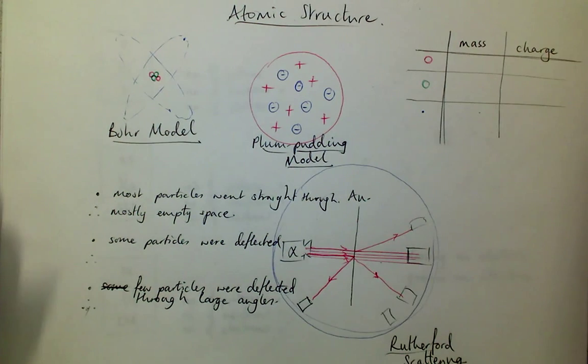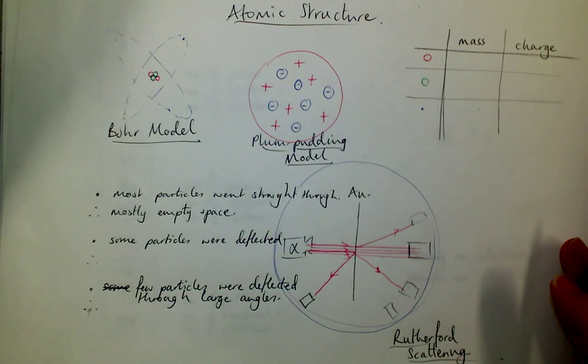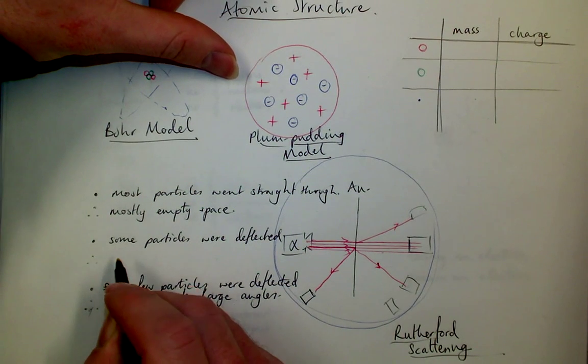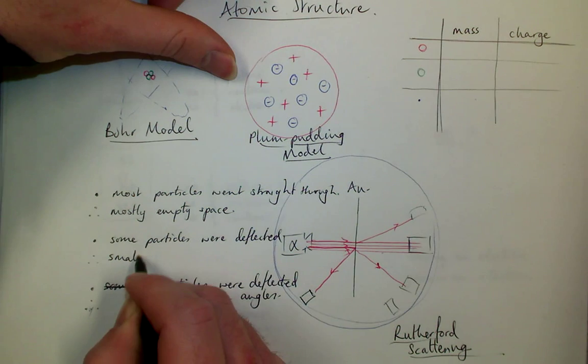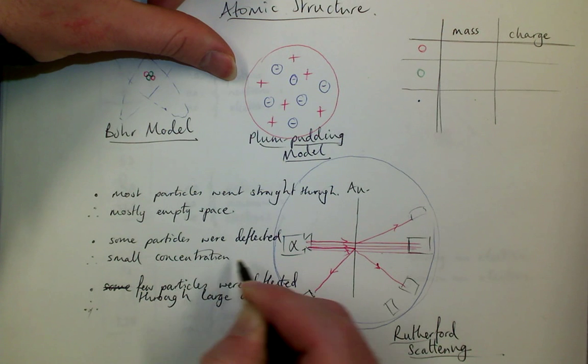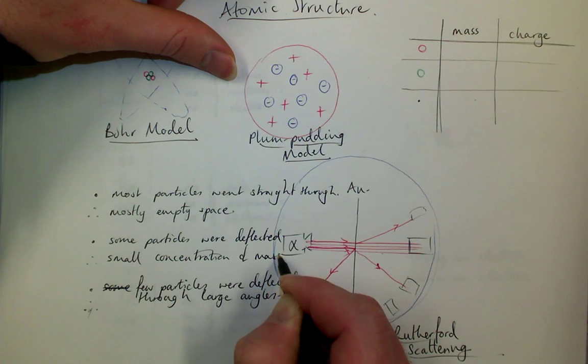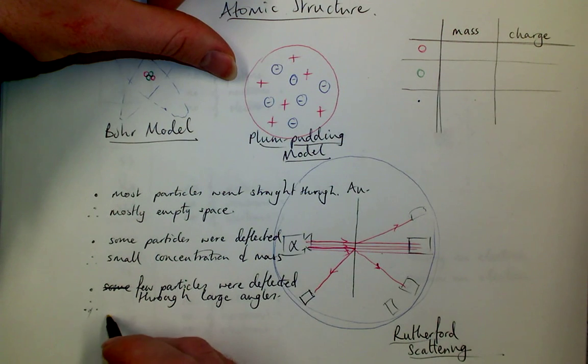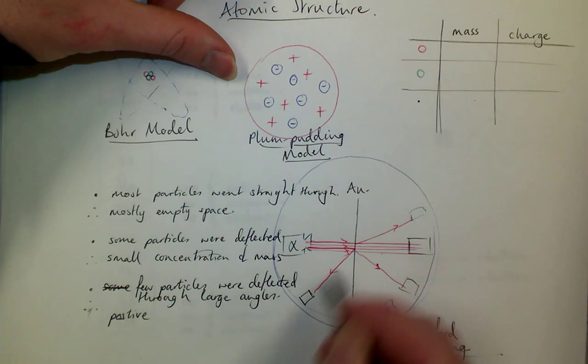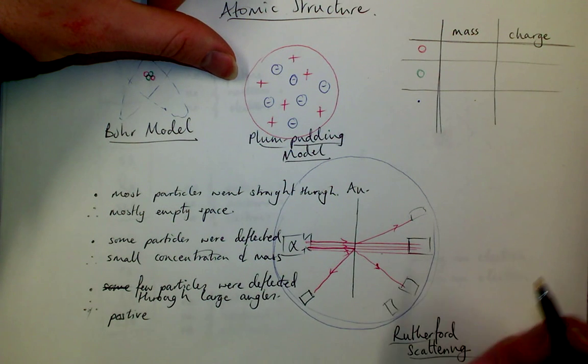And his two conclusions for this was that, firstly, there must be a very small concentration of mass somewhere in the atom. And that it must be, that concentration of mass must be a positive charge because it repelled the positive alpha particle.